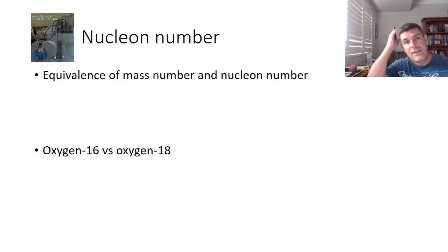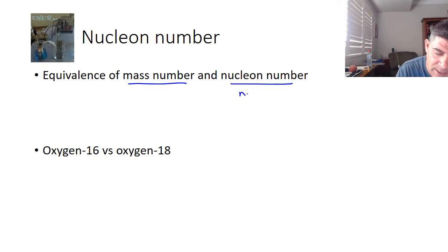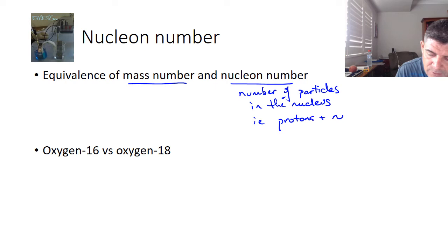So one of the things that is important is that we are now putting together an equivalence between the mass number, or the atomic mass of an element, and the nucleon number. That is, the number of particles in the nucleus, i.e., protons plus neutrons.